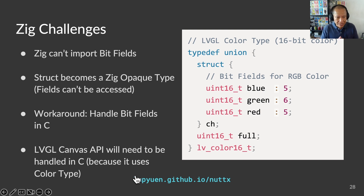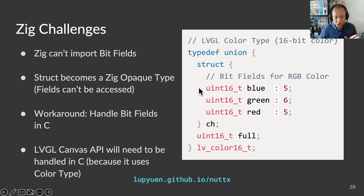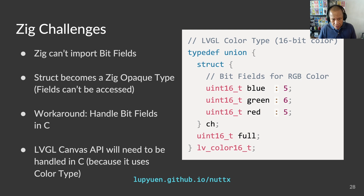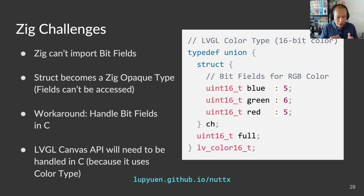Some of us might wonder: if Zig is really so great, why isn't everyone using it yet? Well, Zig is still new — it hasn't reached version 1.0 yet. One quirk: LVGL defines a struct that represents color in RGB 565 format — 5 bits for blue, 6 bits for green, 5 bits for red, total 16 bits — implemented with bit fields. Sadly, this is a no-no for Zig. Zig will refuse to import struct types with bit fields. Instead, it becomes an opaque type in Zig — we can pass pointers to it, but we can't create instances or access the fields inside. The workaround is to access the bit fields in C and have Zig pass struct pointers to C. This complicates some LVGL widgets like the Canvas widget, which uses the color type.